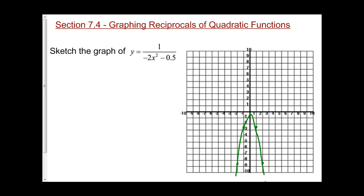Now I need to draw my asymptotes. I'm always going to have an asymptote at y equals 0, so I'm going to draw a line through y equals 0. This graph doesn't have any x-intercepts, so I'm not going to have a vertical asymptote.